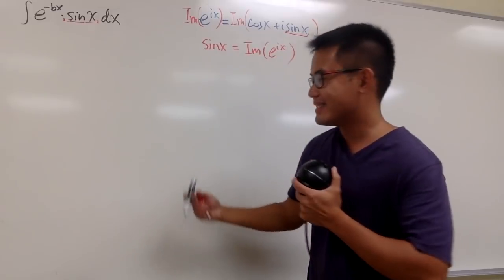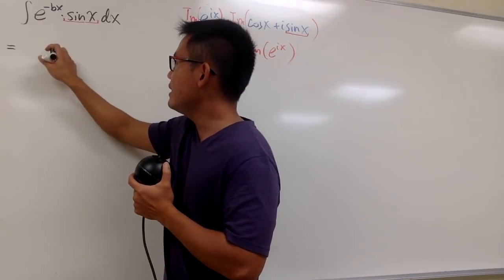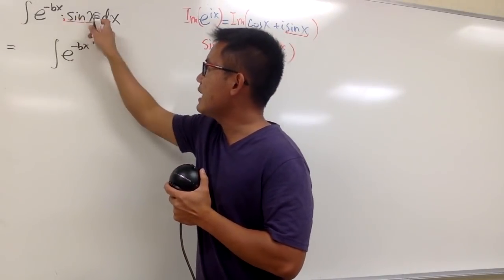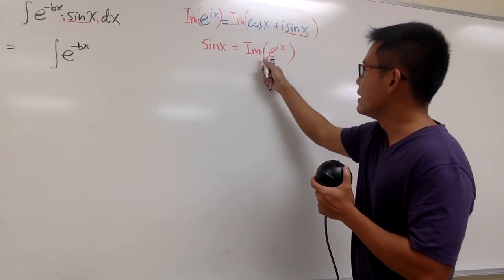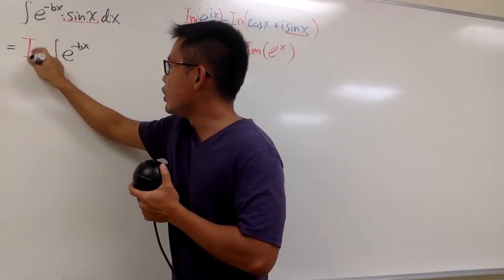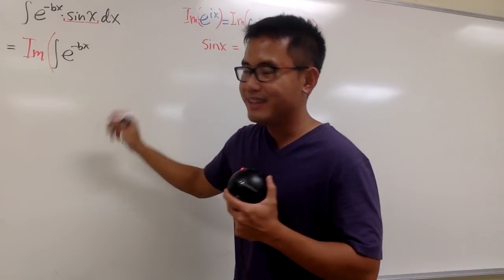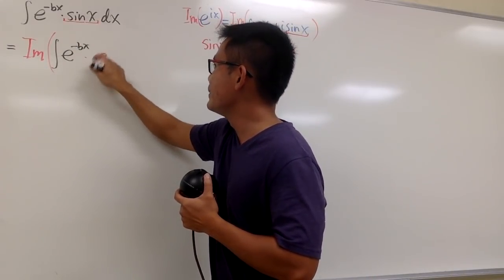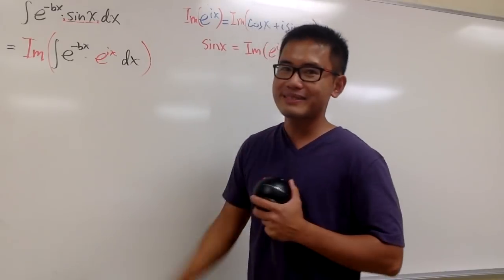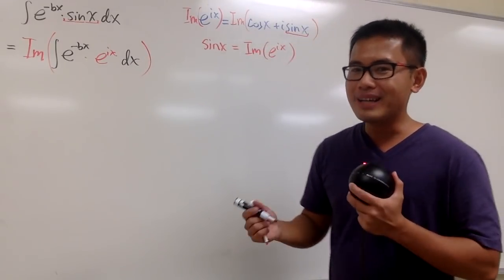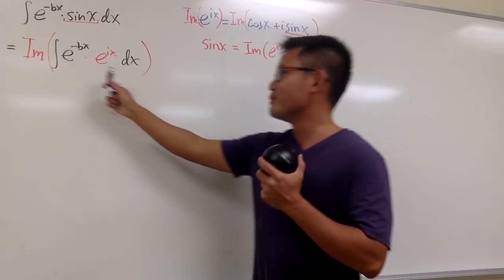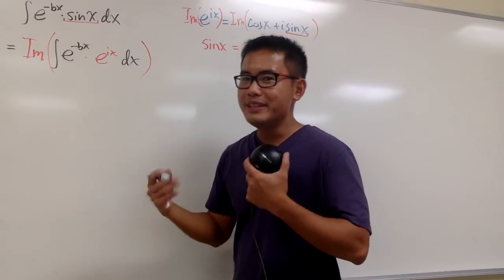We have the integral of e to the negative bx, and for the sin x, we know that this is the same as the imaginary part of e to the ix. So we can just focus on the imaginary part of whatever this becomes when you replace sin x with e to the ix inside. This is why it's called complexifying the integral — because we introduced the complex number. And this is so much better because we're just integrating e to the something.